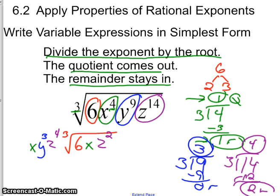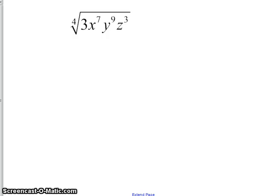That's our first problem. This is the answer. Moving on. Our next problem. I'm again going to start with the coefficient, which is 3. 3 is a prime number, so therefore it's certainly not a perfect power of 4. So that means that 3 is going to stay inside the fourth root.